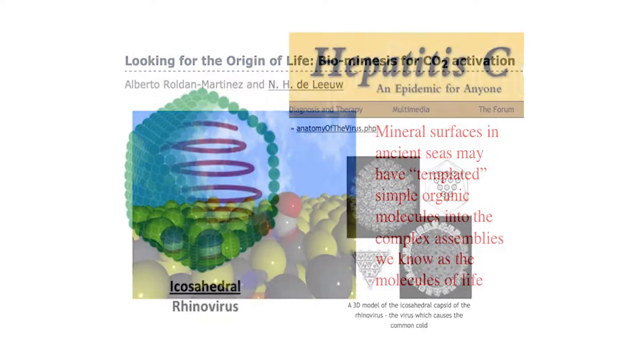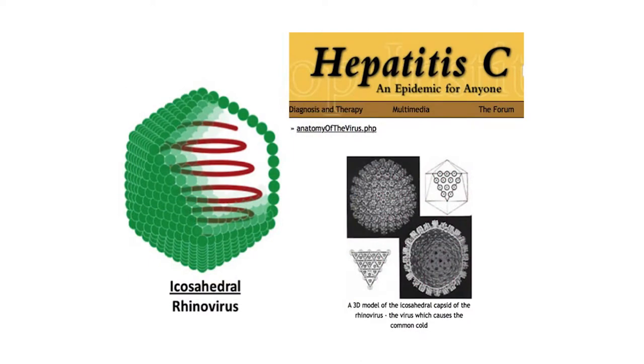Another place to look when thinking about organization is viruses, which have a superbly organized protein shell — the capsid — around them. That organized protein layer is probably why viruses are so capricious and malicious and can do their work so effectively. It's a brilliant use of proteins.